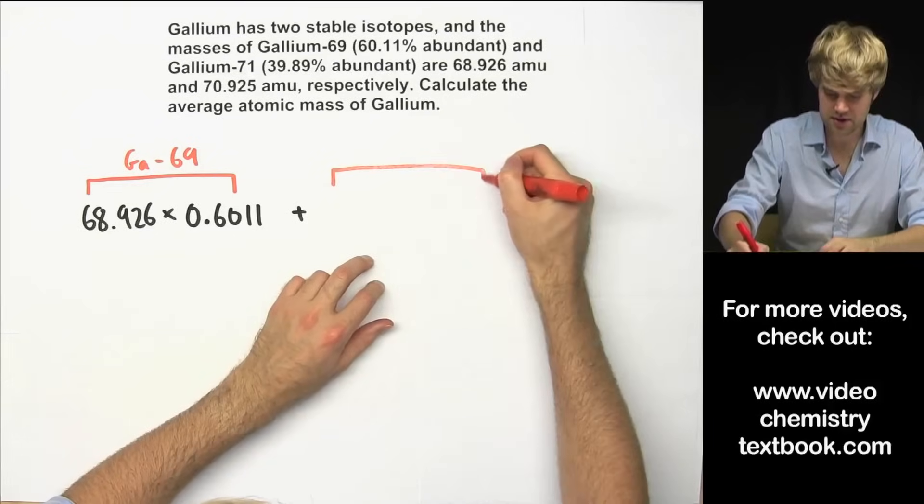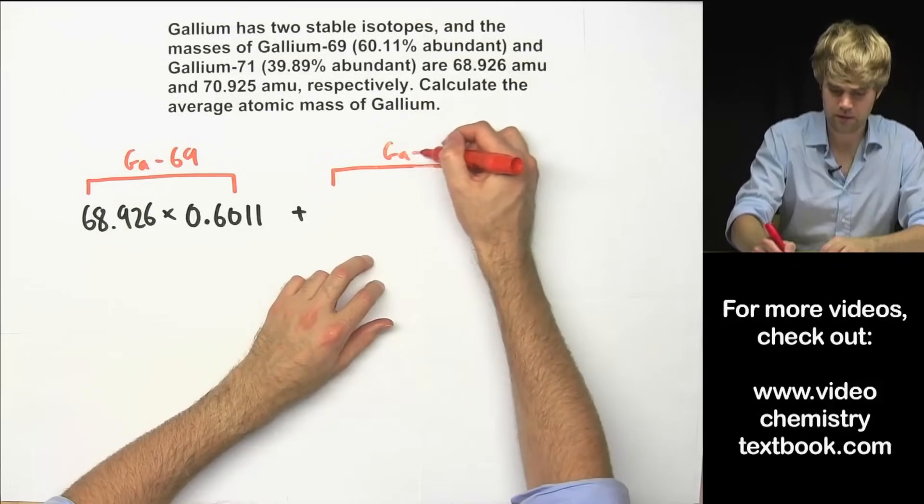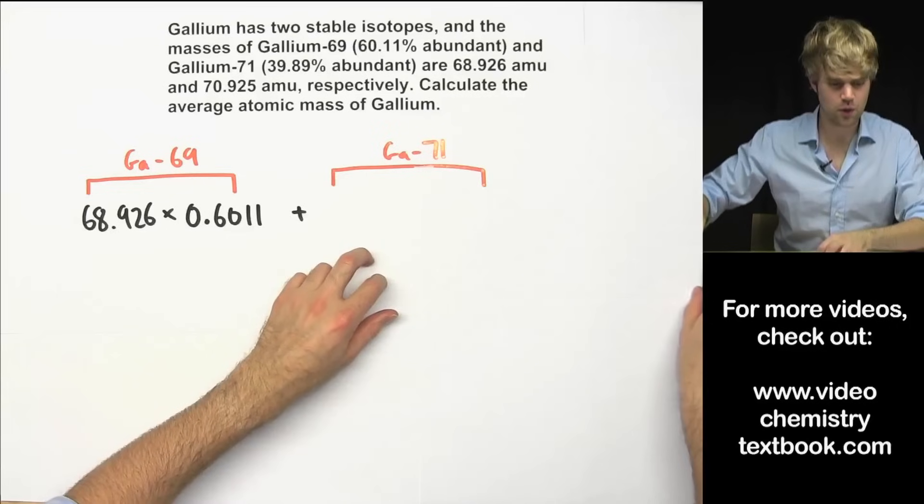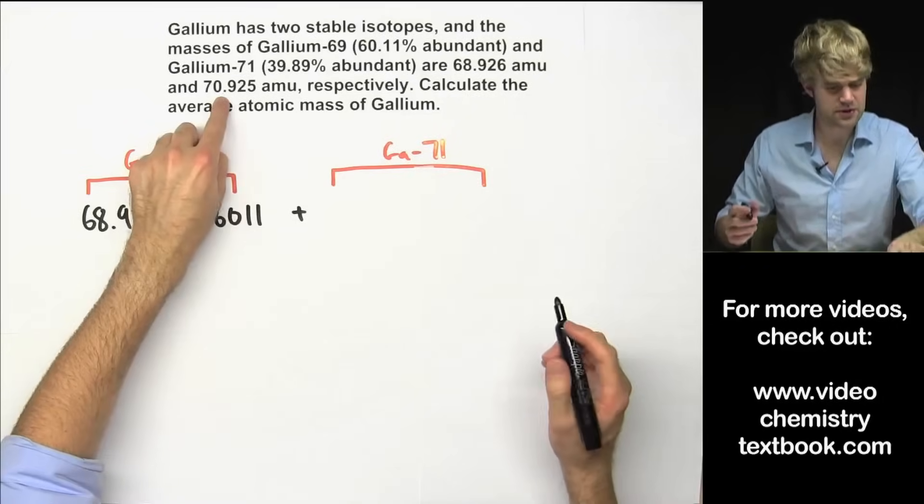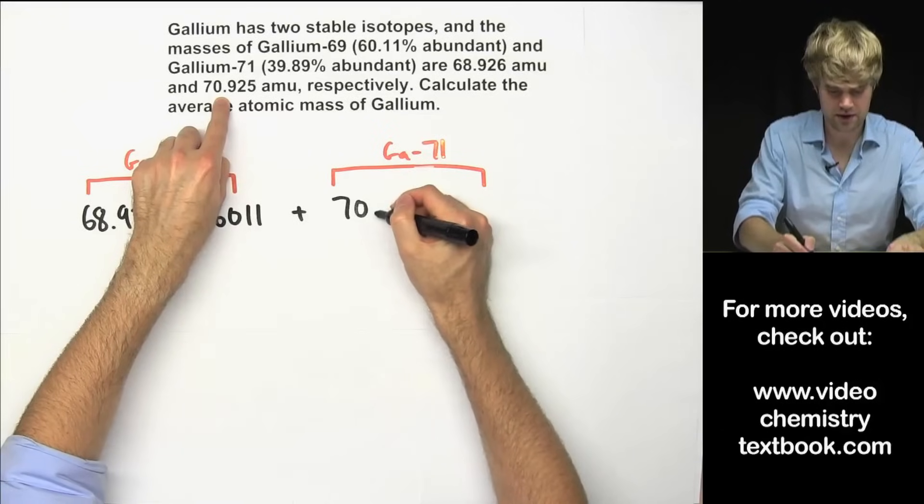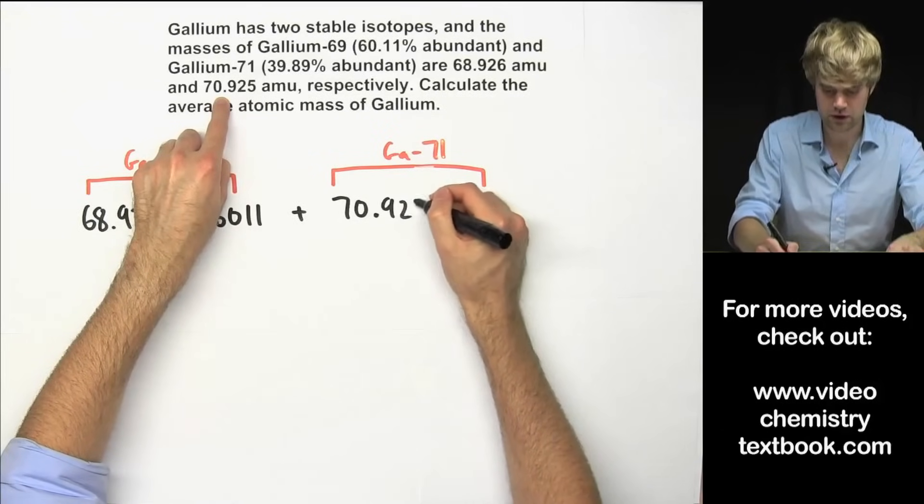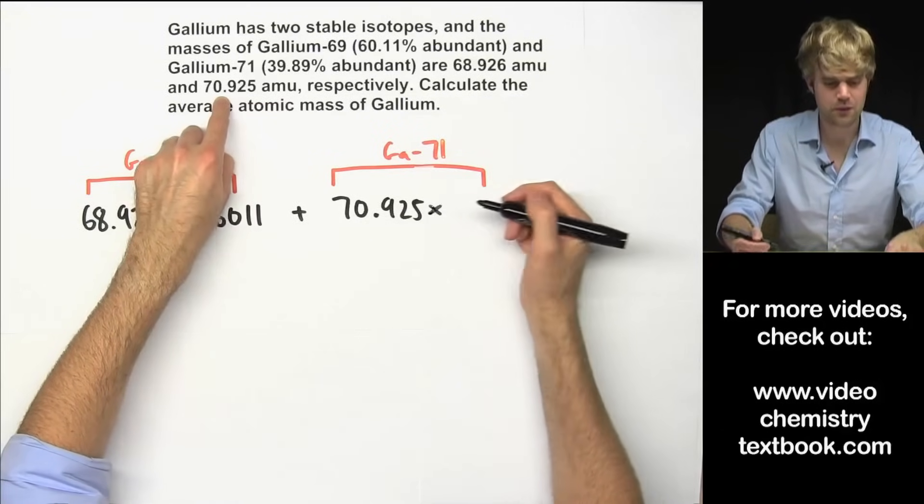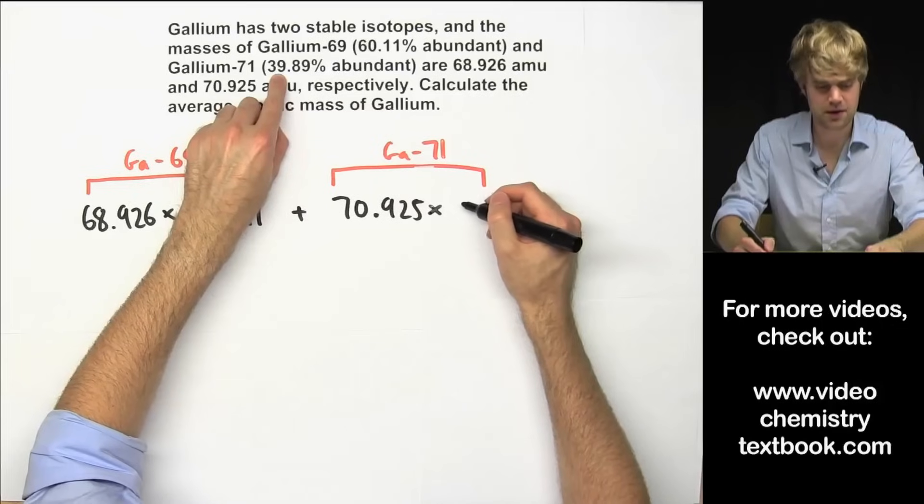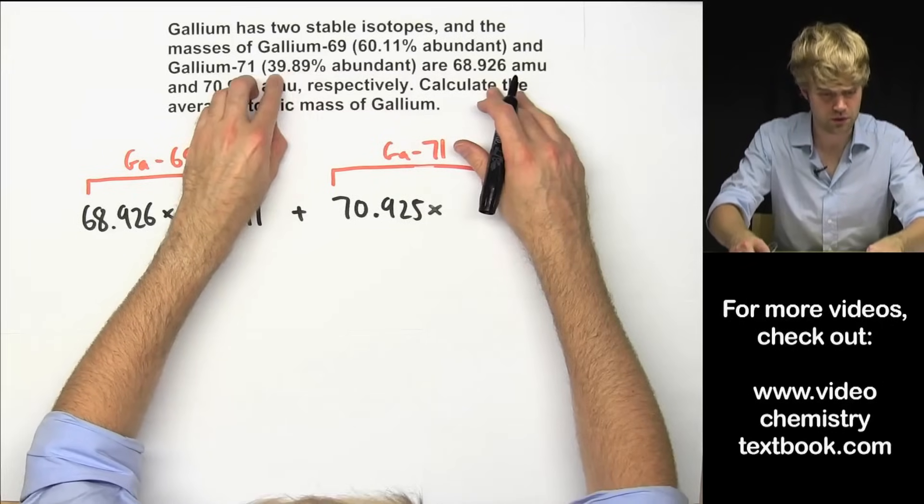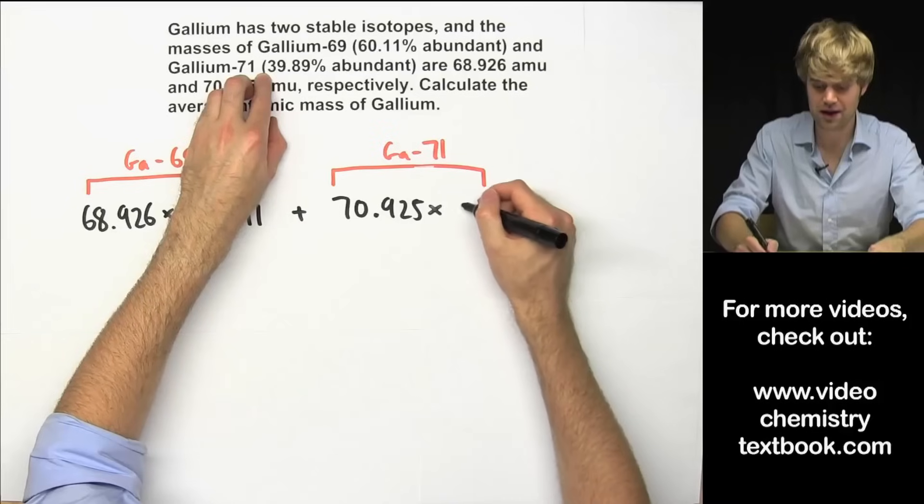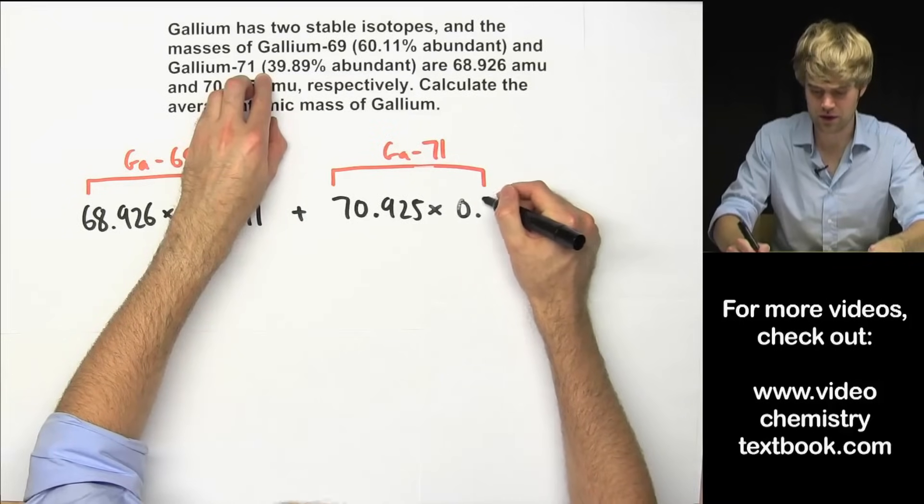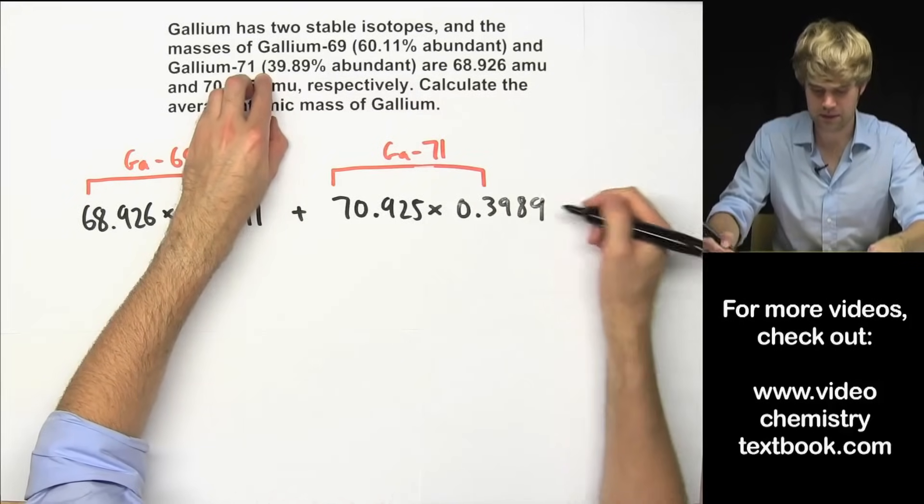Now we're going to want to do the same thing for gallium-71. So its mass is the second one here, 70.925, and we multiply it by its percent abundance as expressed as a decimal. Move this place two to the left so we get 0.3989.